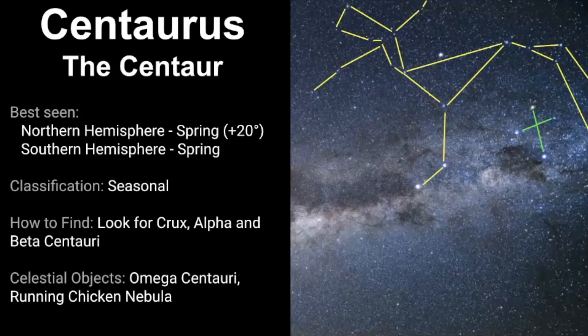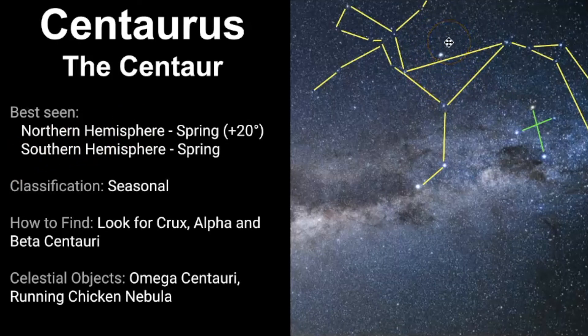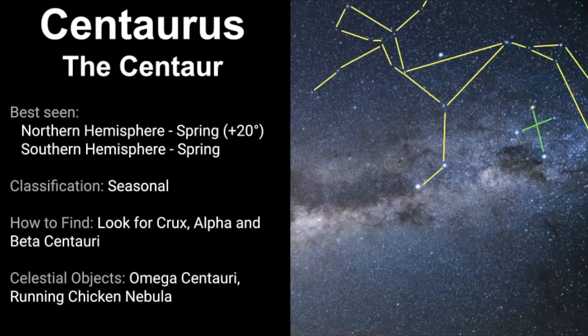We've come to the end of our video about Centaurus the Centaur. So let's review everything we've learned so far. It's best seen in the springtime and if you're in the Northern Hemisphere, you need to be in the tropics in order to see this constellation at all. If you're in the Southern Hemisphere, it shouldn't matter which latitude you're at, you still should be able to see Centaurus. It's classified as a seasonal constellation and the best way to find it is to look for Crux or the Southern Cross and then use Alpha and Beta Centauri to help you get started with tracing out the rest of the constellation. There are some really cool celestial objects, one which is Omega Centauri, this globular star cluster here, and the Running Chicken Nebula, which is not quite pictured here, but it's down in this arena, so something to look for as well.